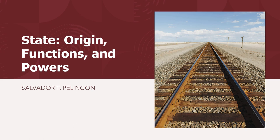These four elements are very important because we cannot say that a certain entity is a state in the absence of any of the four elements. Please bear in mind those elements and the definition, because out of the definition you can get the elements. This time, we will continue our discussion on state, focusing on its origin, functions, and powers.